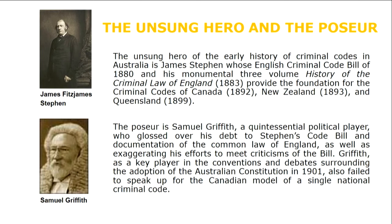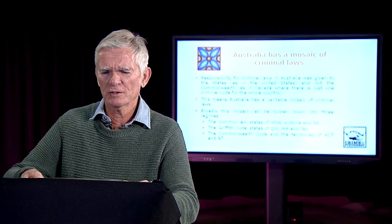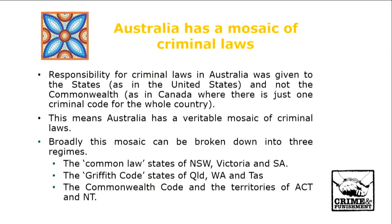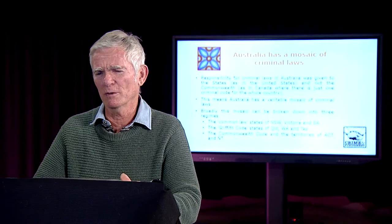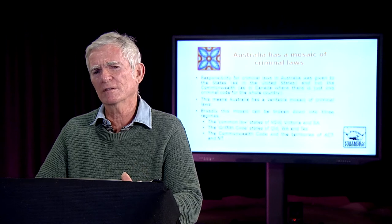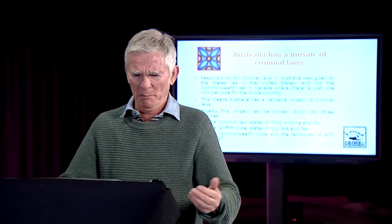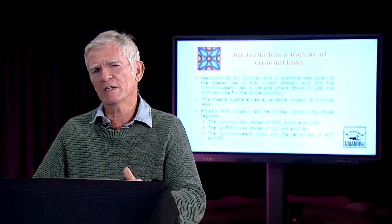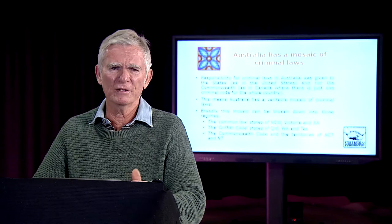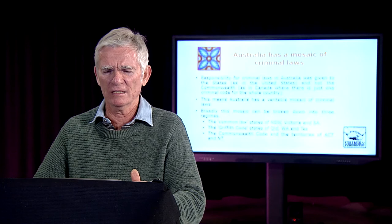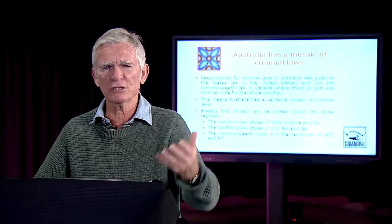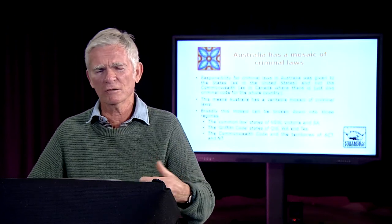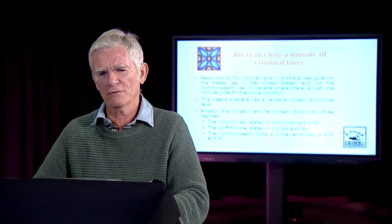Just to put a constitutional perspective on this — look at section 51 of Australia's constitution. Section 51 gives the powers of the Commonwealth. When all the convention delegates, including Griffith, were sitting down in the 1890s to discuss what powers they were going to give to this fledgling Commonwealth Government of Australia, they had various models to look at and they chose, unfortunately in the case of criminal law, the United States model of leaving it with the states rather than Canada's decision to give it to the federal government. So section 51 is where you look to see what the powers of the Commonwealth are.